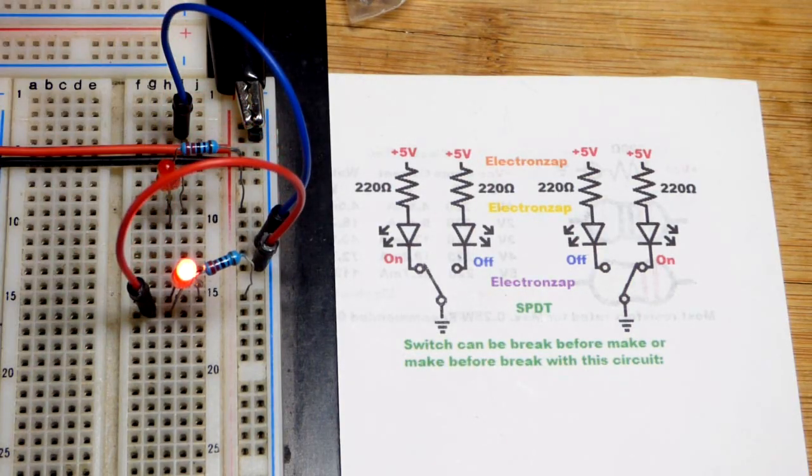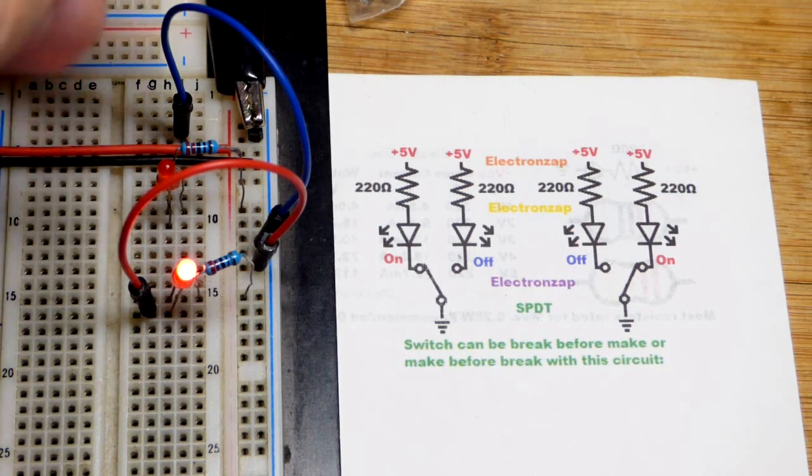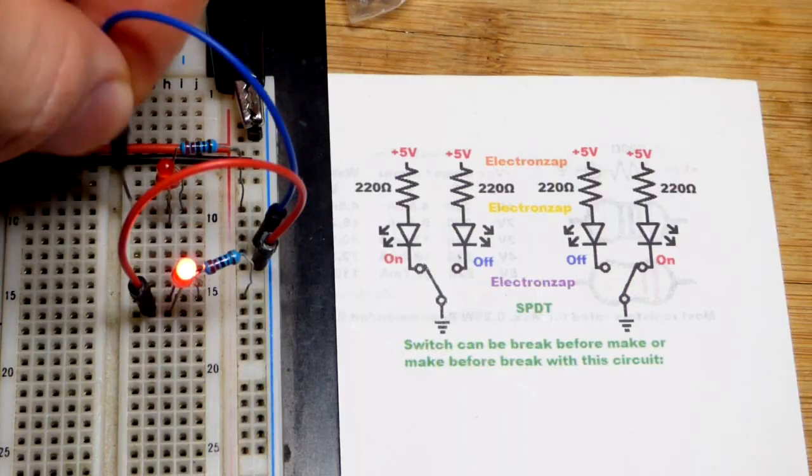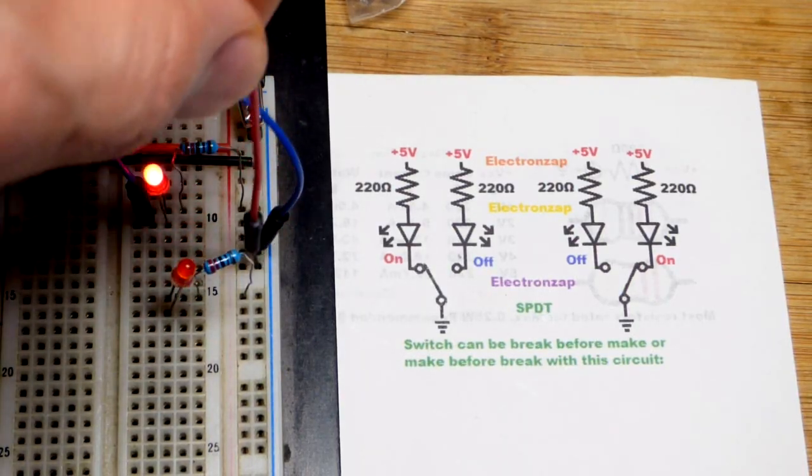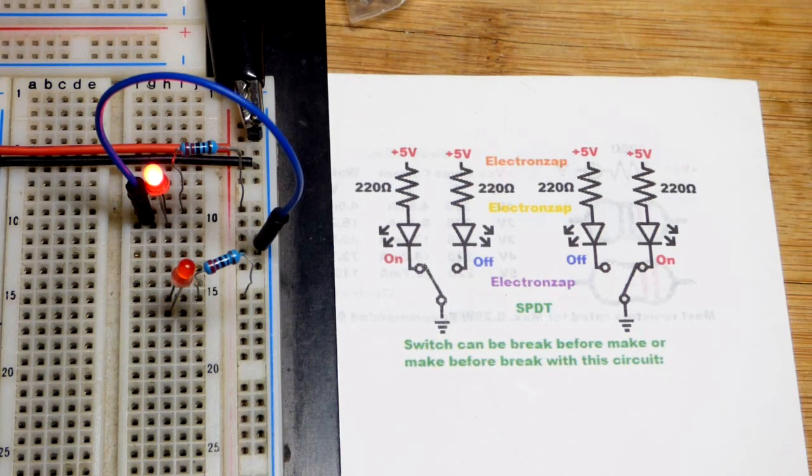But an actual switch, you would have a pole at one extreme connected to one, you set it about halfway and then the other one will light up, and then you keep moving it to the other end and the second LED lights up. That would be a make before break, and those would be your only two options for an actual switch.